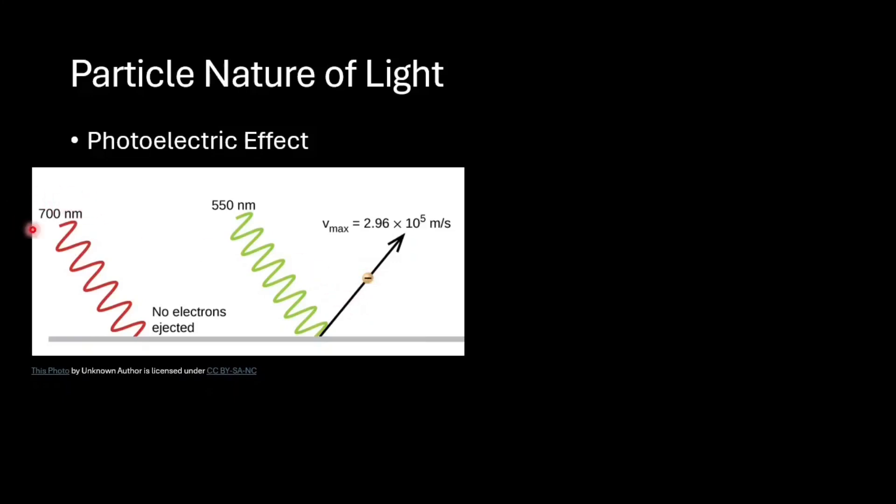No electrons are released no matter how bright the light is or how long it shines. The surprising part is that photoelectric effect depends only on the frequency or wavelength of light and not on its intensity or brightness.